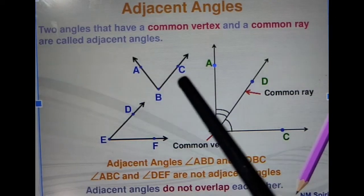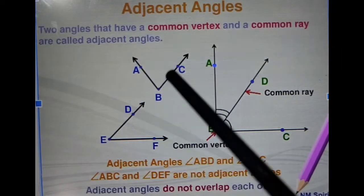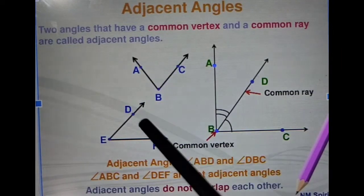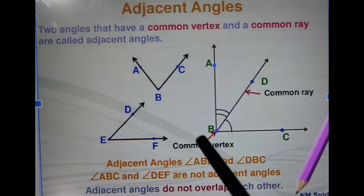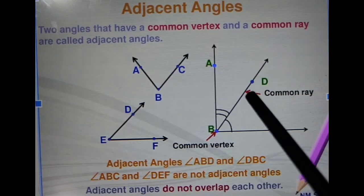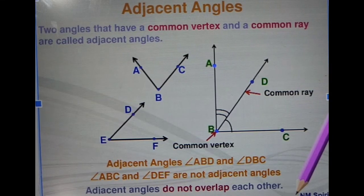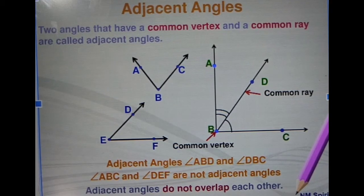In this figure these two are not adjacent angles. They are different because their points are different and they have a common ray between them. Adjacent angles do not overlap — they are adjacent to each other, like the neighborhood which has a common wall between their houses.